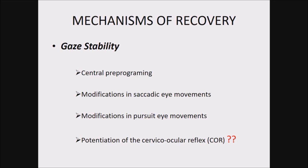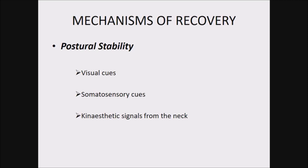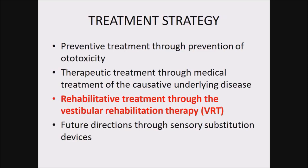Bilateral vestibular failure rehabilitation basically involves accelerating these compensatory mechanisms to stabilize the gaze. For postural stability, these patients initially depend more on visual cues since their vestibular system is not functioning. Some patients may depend more on somatosensory cues, and some may rely on kinesthetic signals from the neck. If we assess which cues a patient depends on, we can make that patient concentrate on the cues they are not currently using for postural stability.